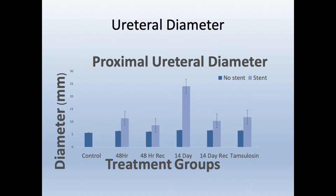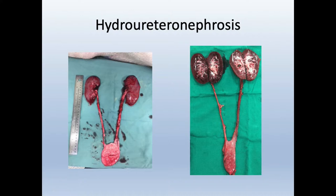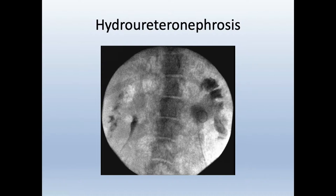Just to quantify this — looking at significant changes in ureteral diameter, comparing 14-day stented pigs versus non-stented pigs, there's a significant difference. Regarding hydronephrosis, in a 48-hour stented pig you can see the regular unstented ureter compared to the stented ureter, and the significant difference in the size of the kidney — and this is just after two days. We performed IVPs on these pigs; initially there was no hydronephrosis, and you can see the contralateral and stented side, with significant hydronephrosis on the stented side.